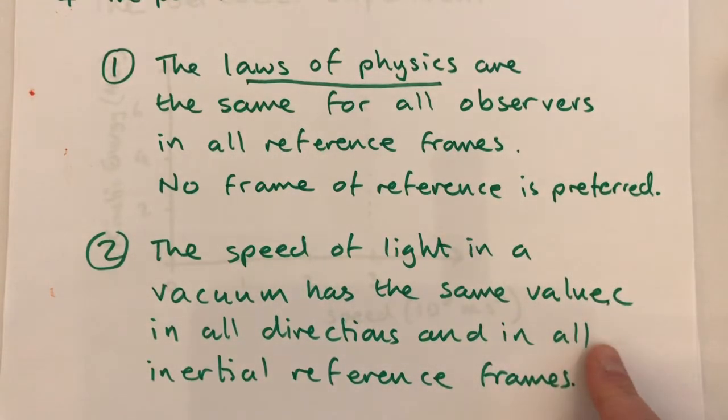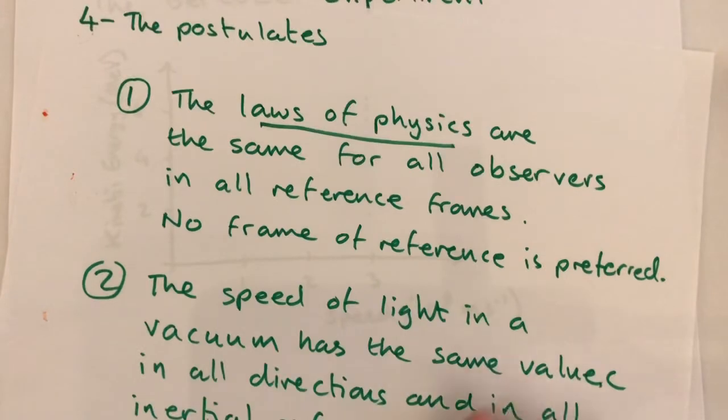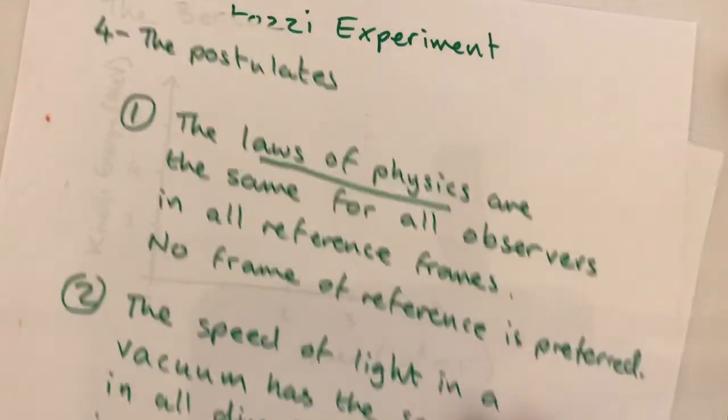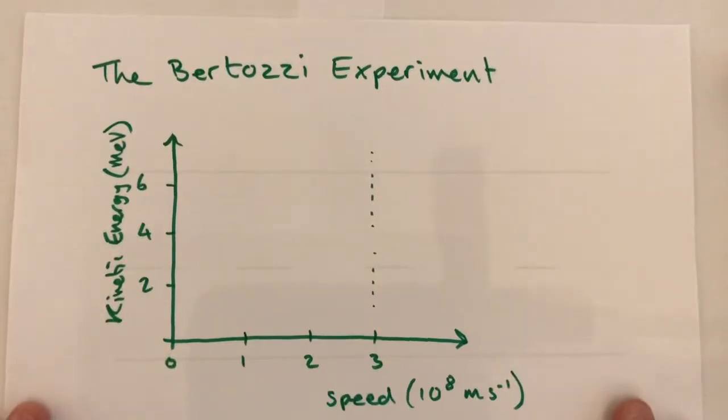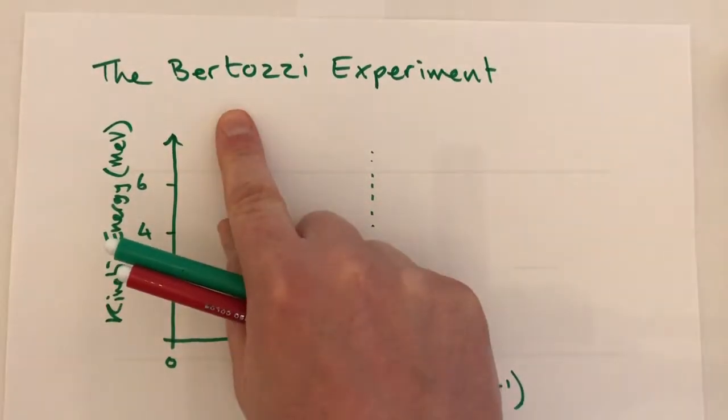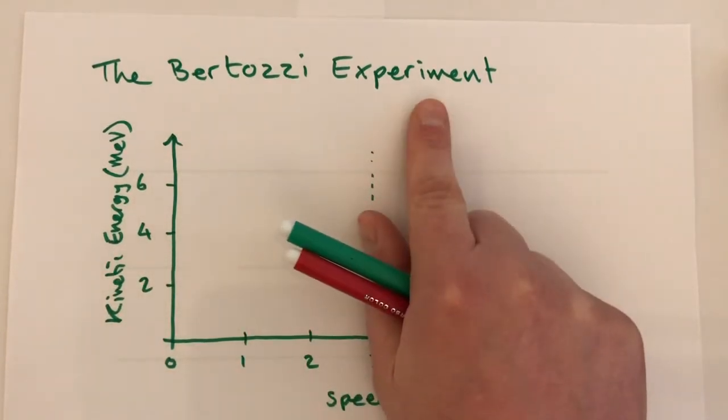Both of these postulates have been exhaustively tested and no exceptions have ever been found. The existence of a limit to the speed of accelerated electrons was shown in a 1964 experiment performed by William Bertozzi. This became known as the Bertozzi experiment, if you wanted to look it up on YouTube or Wikipedia.